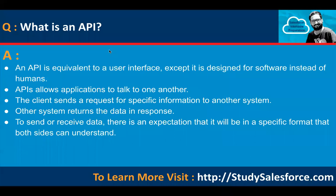The first question is: what is an API? An API is equivalent to a user interface, except it is designed for software instead of humans. APIs allow applications to talk to one another. The client sends a request for specific information to another system, and the other system returns the data in response. There is an expectation that data will be in a specific format that both sides can understand. Basically, between two systems, if you want to create an interaction system, you can create APIs.